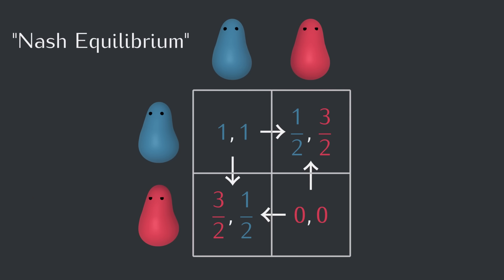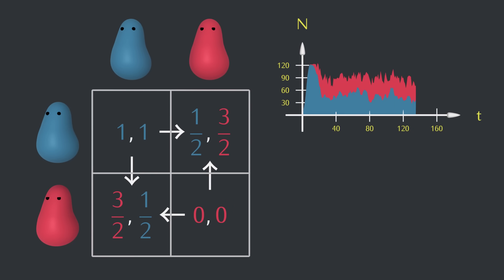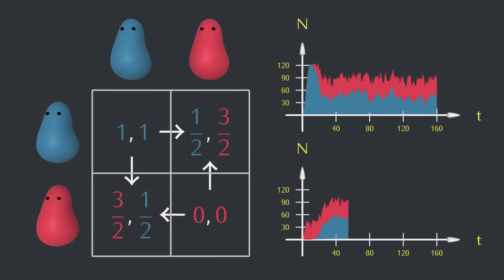So the best strategy isn't hawk or dove. It's to do the opposite of what your opponent is doing. When there are a lot of doves, it's better to be a hawk. And when there are a lot of hawks, it's better to be a dove. There's some equilibrium fraction of doves that the population has always pulled toward.